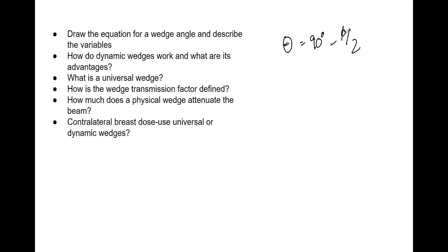Phi is the hinge angle, and that is the angle between the central axis of the two beams — kind of like a wedge pair. An optimum relationship exists so that this provides the most uniform dose. When you consider your field geometry and figure out what the hinge angle is, that will tell you what the wedge angle should be.